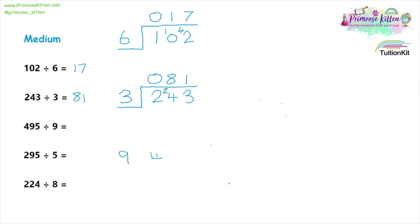495 divided by nine. How many nines go into four? That is zero, so we carry the four over. Then we ask: how many nines go into forty-nine? We know that nine times five is forty-five, so we put five up there and carry the four over. And nine will go into forty-five five times again.